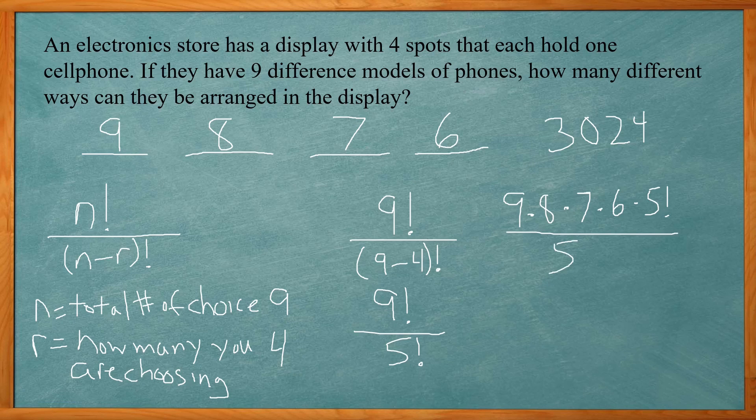On the bottom, I have the five factorial. And the top and bottom both have five factorial, so they cancel out. So it comes out to nine times eight times seven times six like we had the easy way. That gives you 3,024.